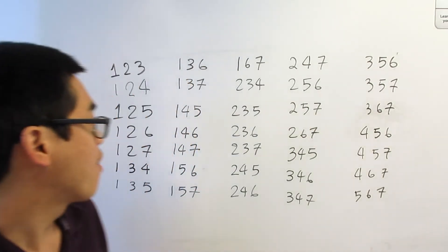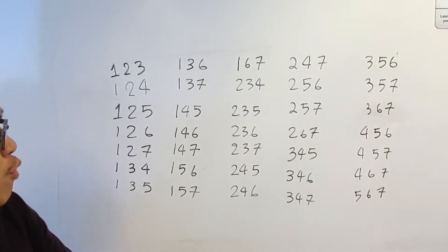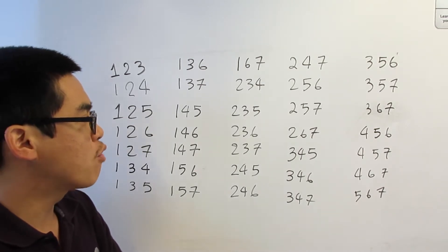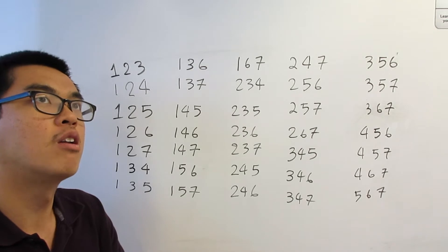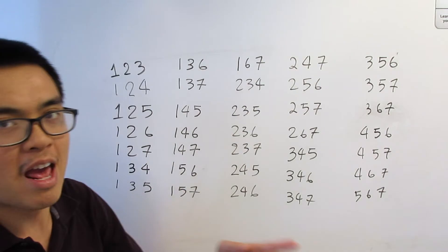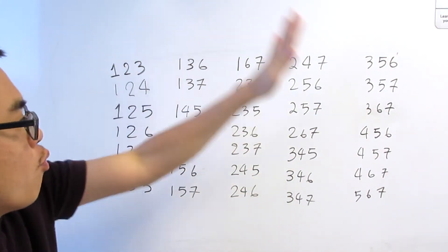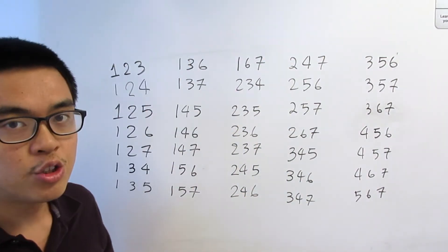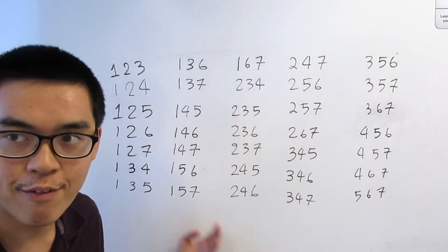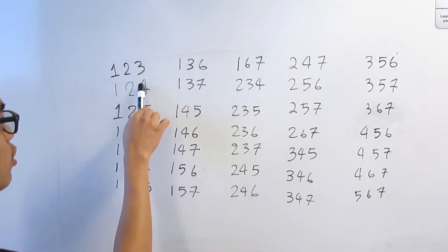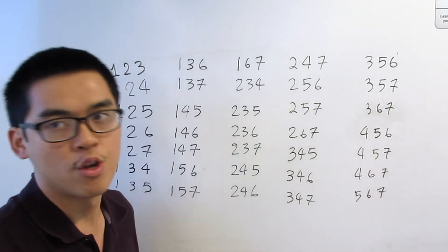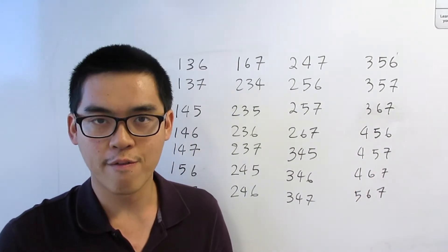Here they are — I think I have them all. So if you just come up with three random numbers between one and seven, you should find your sequence there. Like if you want two, four, and seven — two, four, and seven is right here. Seven choose three is the number of configurations on this board. Counting them all, seven choose three is thirty-five.